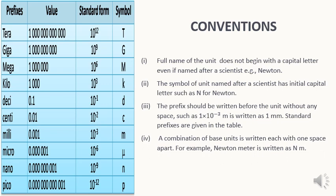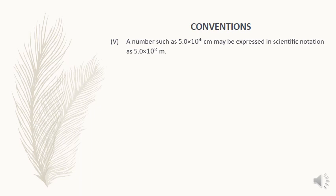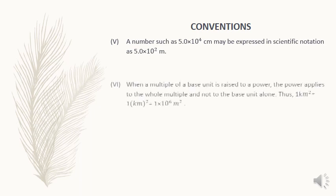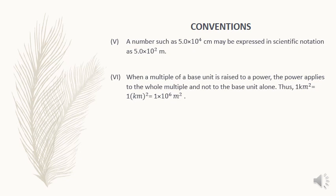A combination of base units is written each with one space apart. For example, Newton meter is written as N space M. Compound prefixes are not allowed. For example, 1 micro micro farad may be written as 1 picofarad. A number such as 5.0 into 10 raised to the power 4 cm may be expressed in scientific notation as 5.0 into 10 raised to the power 2 meter. When a multiple of base unit is raised to a power, the power applies to the whole multiple and not to the base unit alone. Thus, 1 kilometer square is equal to 1 into 10 raised to the power 6 meter square.